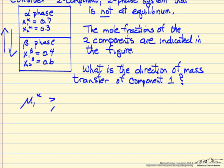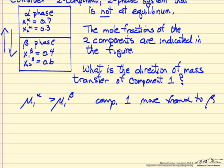If the chemical potential in the alpha phase is greater than in the beta phase, then component one is going to move from the alpha phase to the beta phase. Equivalently, if the fugacity in the alpha phase is greater than the fugacity in the beta phase, then component one moves from the alpha phase to the beta phase. The fugacity notation used in a number of textbooks for mixtures puts a small hat over the fugacity term.